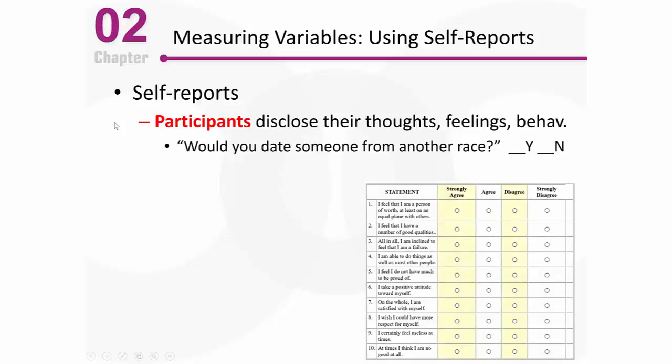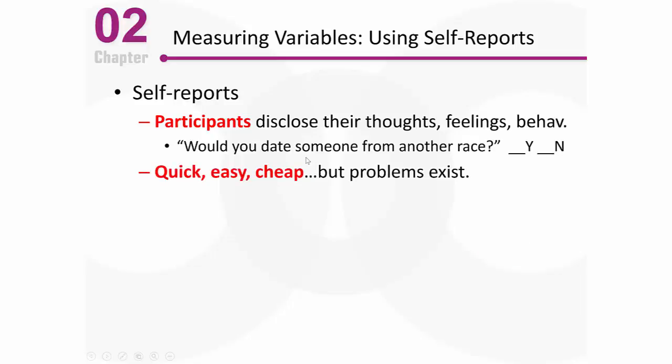If I asked just one question about interracial dating, I can only get so far — it's not a refined enough measure. So I might ask several questions, like the Rosenberg Self-Esteem Scale which has several questions designed to tap into one concept. This is a measurement scale — still self-report. Self-report is very quick, very easy, very cheap, but when things are quick, easy, and cheap, there are usually problems associated with them.